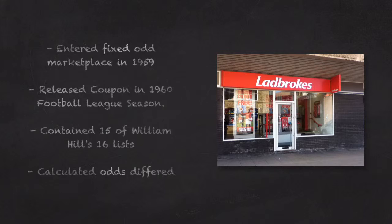Ladbroke were also a popular bookmaker in the UK, and entered into the fixed odds football betting market in 1959. In the lead up to the 1960 English Football League season, Ladbroke released their latest coupon. In total, 15 of the 16 lists William Hill produced had been arranged in the same order, with the same headings, almost identical varieties of wagers, and similar explanatory notes by Ladbroke.